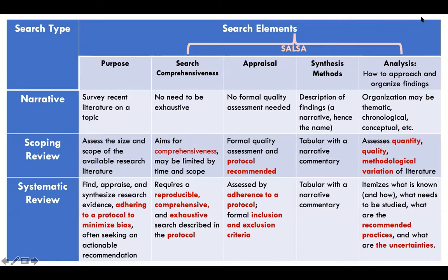What you end up doing is going through a process vastly more rigorous than typical narrative reviews. In a systematic review, you're adhering to a protocol and seeking an actionable recommendation — something you can do to improve or to answer a very specific research question.